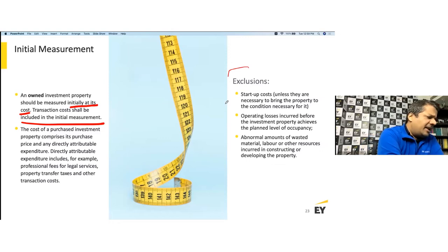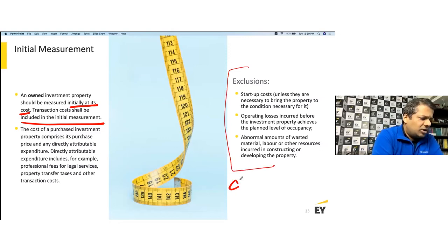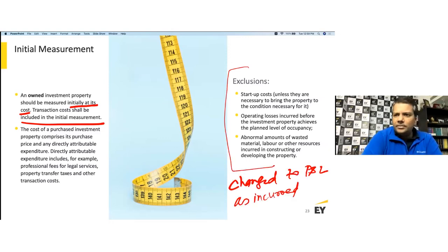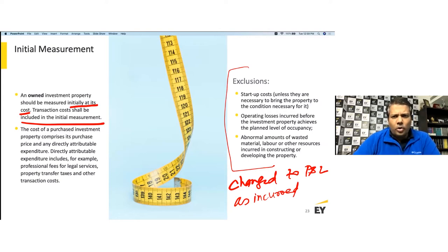What is not to be capitalized: startup costs, operating losses incurred before the investment property achieves the planned level of occupancy, and abnormal amounts of wasted material, labor, or other resources — all are charged to profit and loss as incurred.